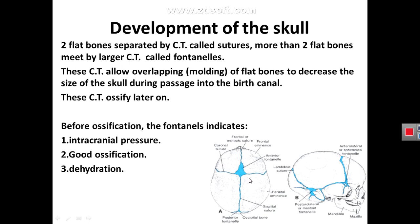The sutures and fontanelles have important clinical significance. When the head of the baby passes through the birth canal during labor, there will be overlap between the flat bones of the cranial vault, decreasing the size of the skull — this is called molding of the head of the baby — making it easier to pass through the birth canal.